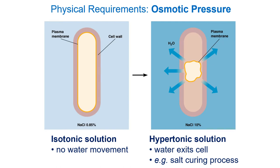Osmotic pressure refers to the amount of internal pressure we would need to apply to prevent the motion of a solvent into a cell. Imagine a cell in pure water — inside the cell we have dissolved salts and other solutes, so water will enter the cell in that hypotonic condition. The amount of pressure needed to stop that is the osmotic pressure.